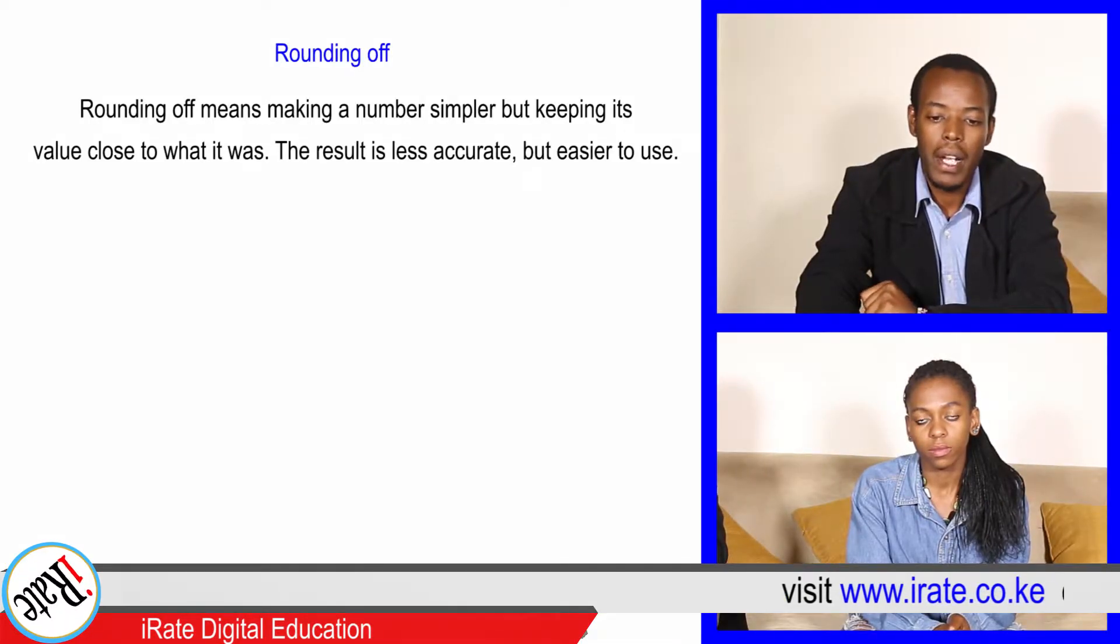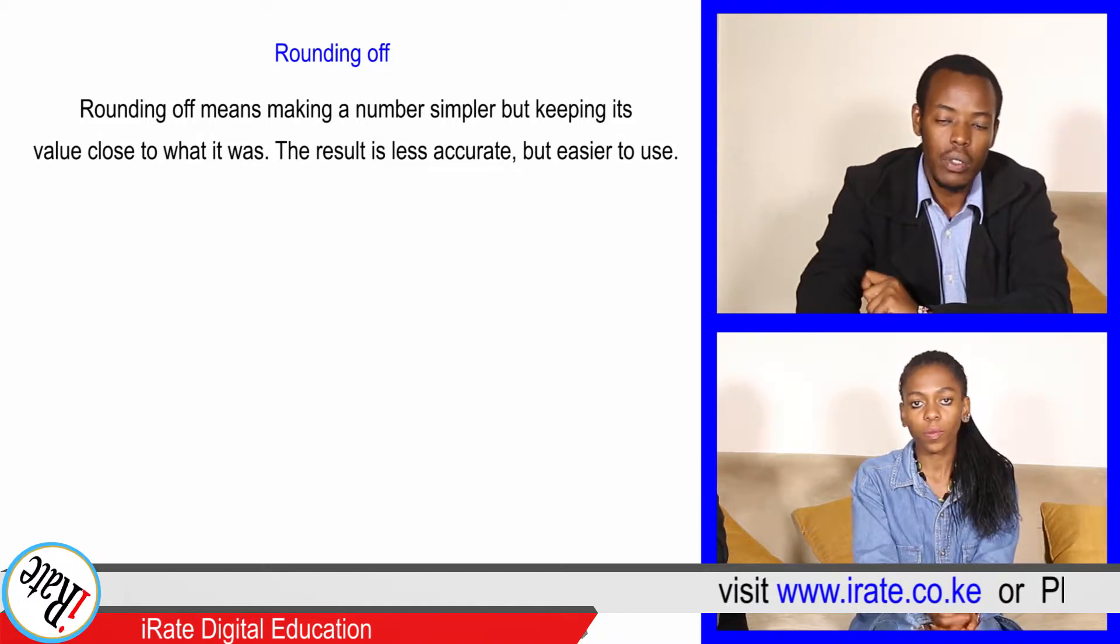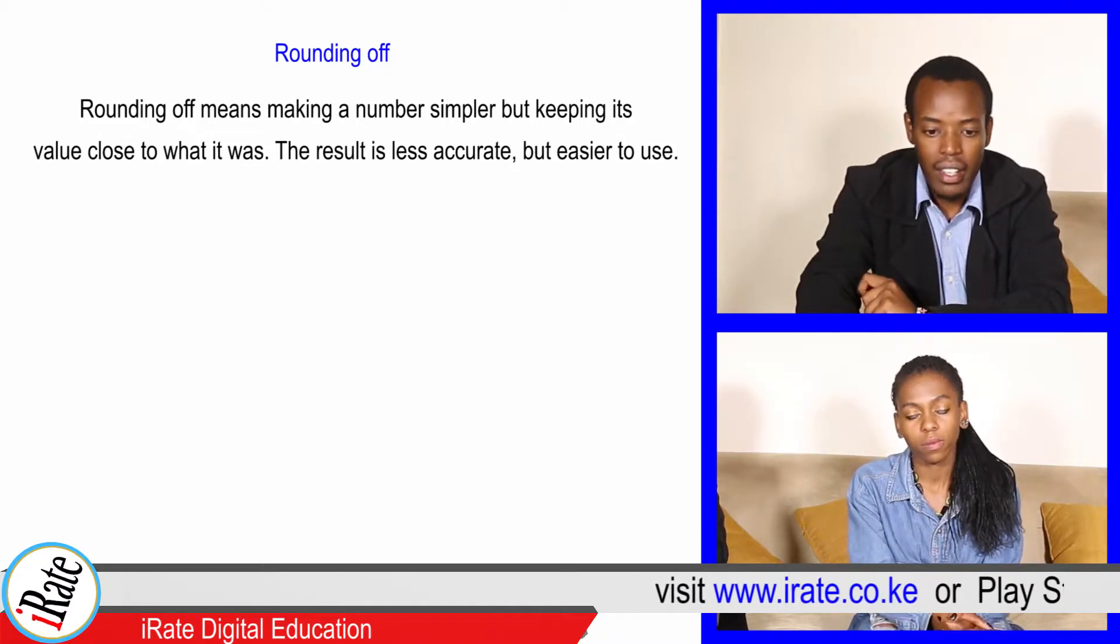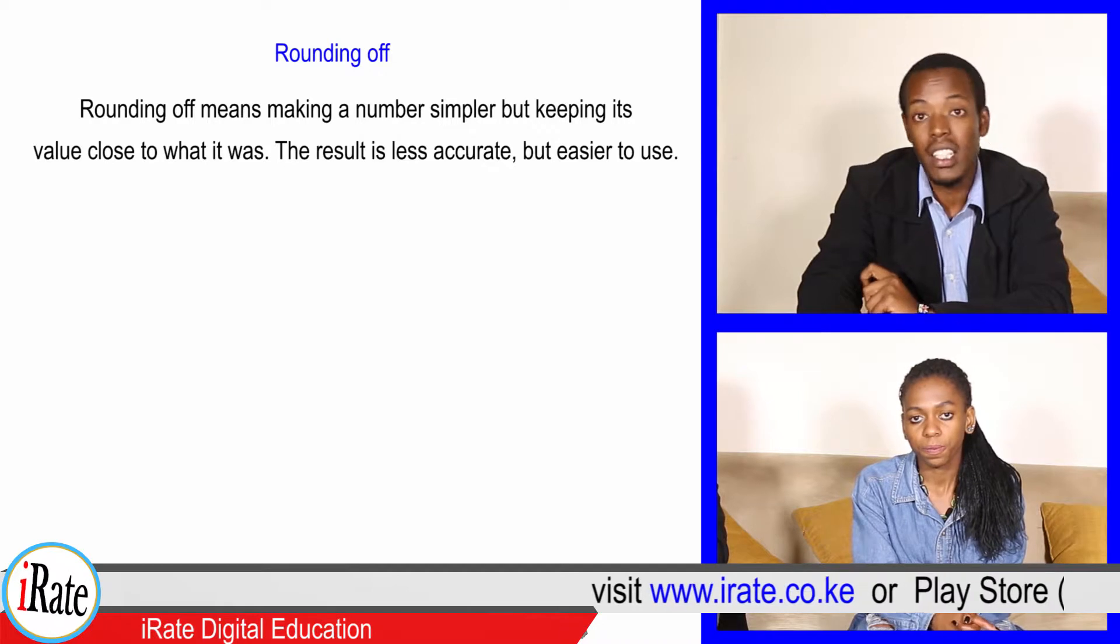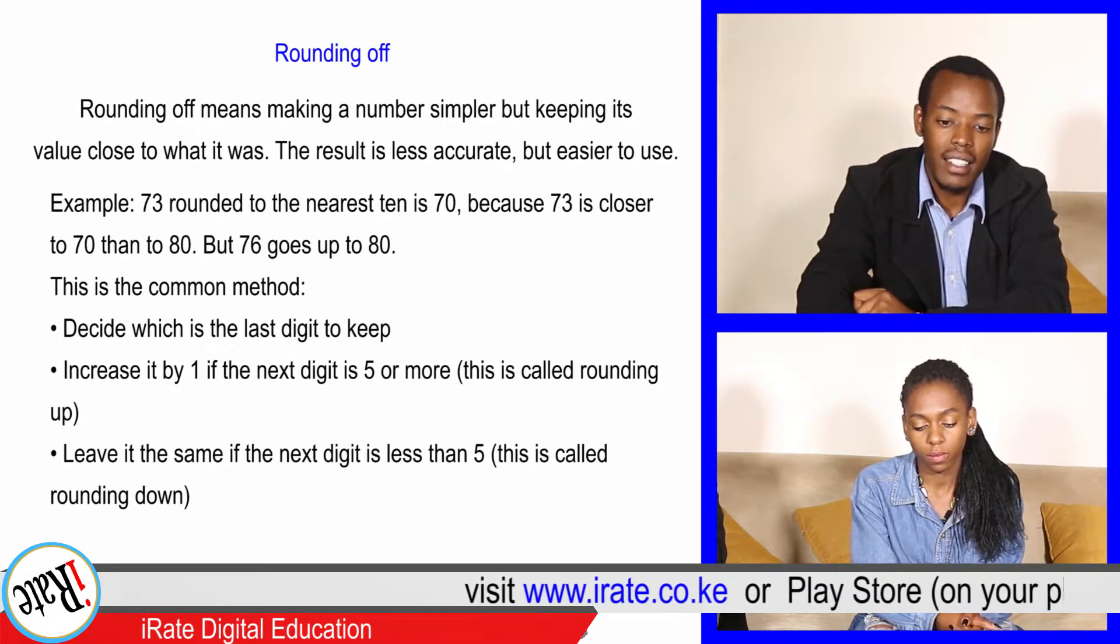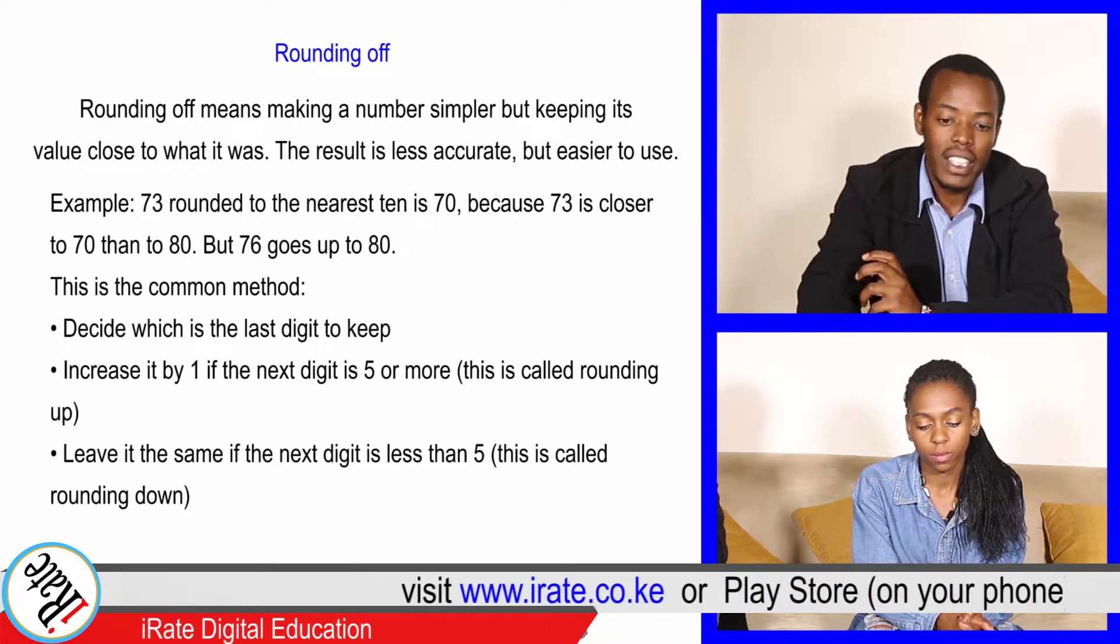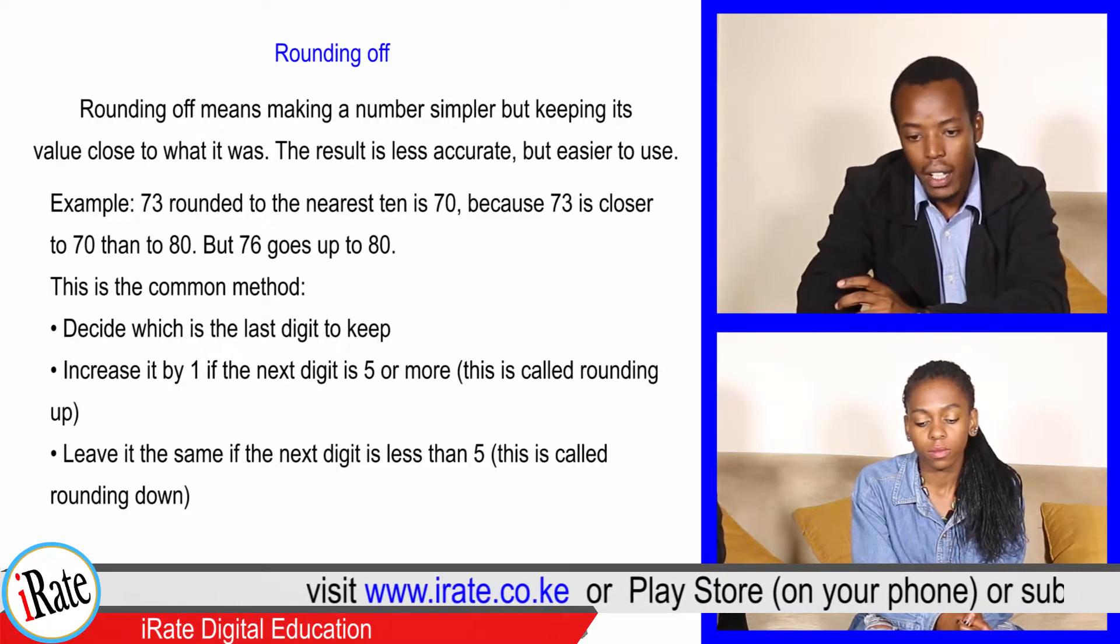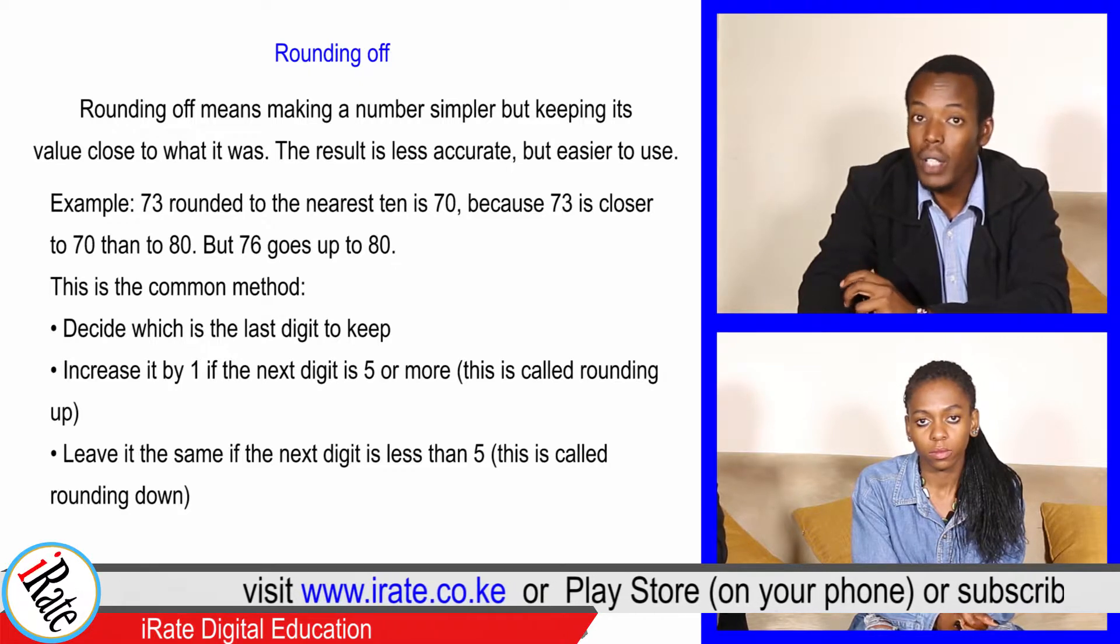Rounding means making a number simpler but keeping its value close to what it was. The result is less accurate but easier to use. For example, 73 rounded to the nearest ten is 70 because 73 is closer to 70 than to 80, but 76 goes up to 80.